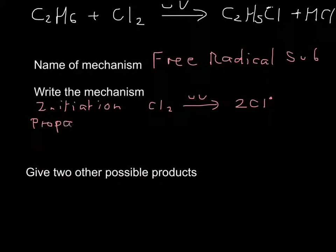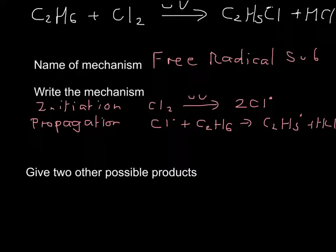You've then got your two propagation steps. First, your chlorine free radical comes to meet ethane. That produces one of your products which is HCl but also C2H5 dot plus HCl. Then that C2H5 dot meets another chlorine molecule to give you your other product C2H5Cl plus another chlorine free radical.